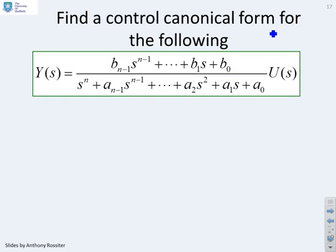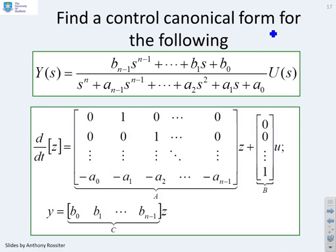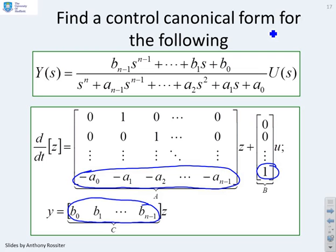What about this example? A bit more generic. You see, now I've got a generic numerator, a generic denominator. Well, as ever, I can just put the denominator coefficients, here I've put them on the bottom row. You can, of course, put them on the top row and use the other form if you want. I've put my 1 down here in the b matrix and then all I've done is put the coefficients of the numerator into the c matrix. So I can write it down by inspection.